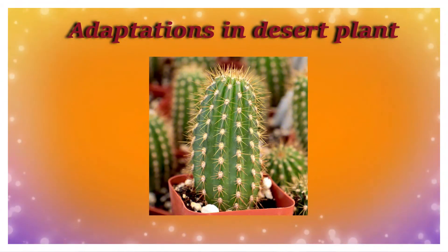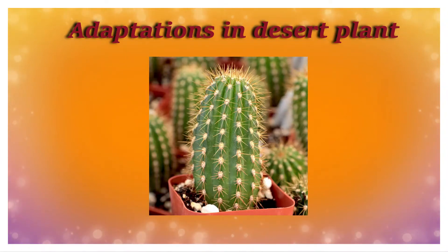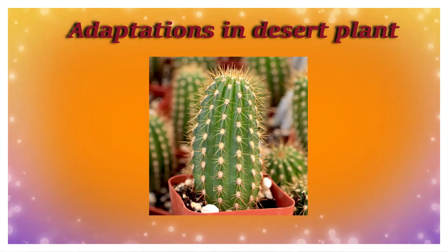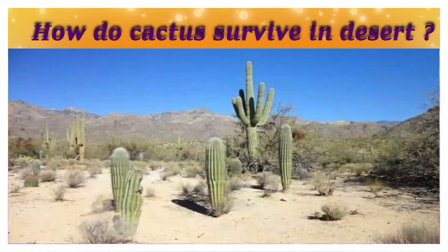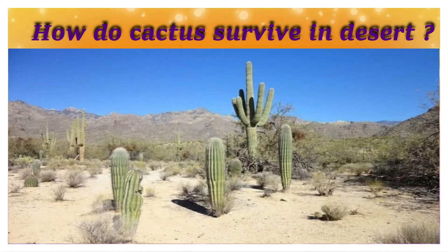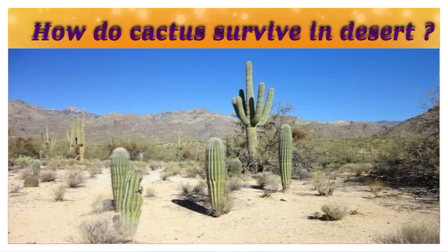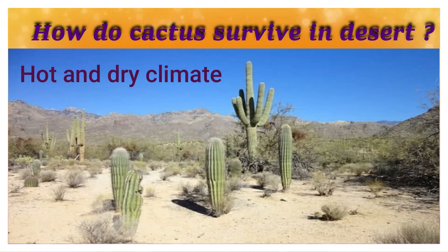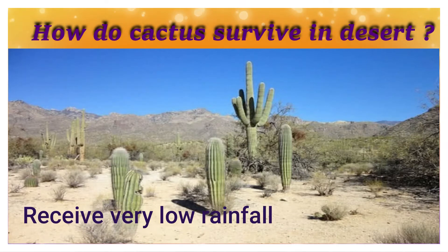Let's see an example — desert plant adaptation. As we know, cactus grows in the desert. But how do cactus survive in this desert area? Desert areas have a hot and dry climate and receive very low rainfall.